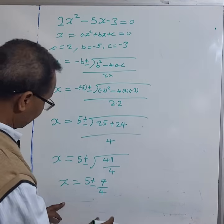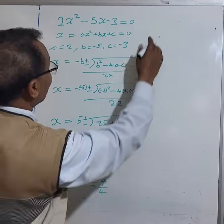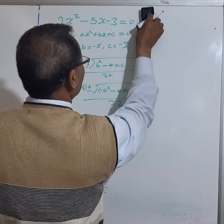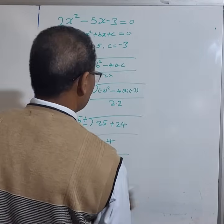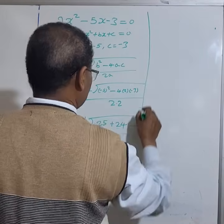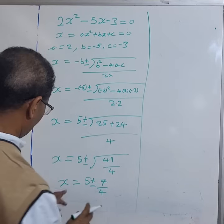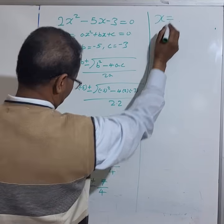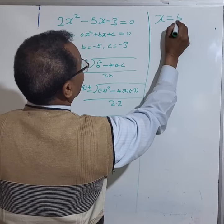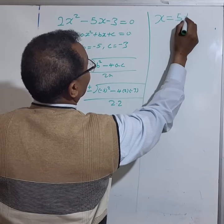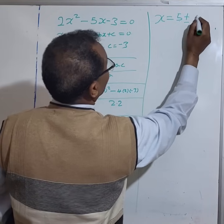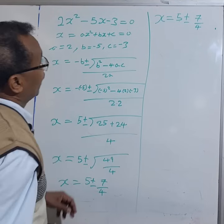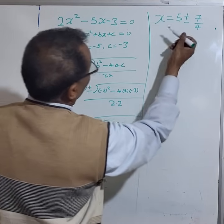So x equals 5 plus or minus the square root of 49 over 4. The square root of 49 is 7, so x equals 5 plus or minus 7 over 4. There are two solutions here.